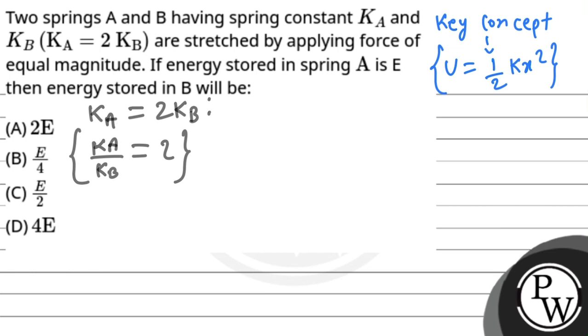The question states that both springs are stretched by the same force. Same force means that FA will be equal to FB. And we know that the force by which the spring is stretched is minus KX.